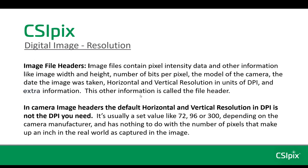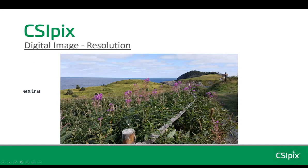In camera image headers, the default horizontal and vertical resolution in DPI is not the DPI you need in forensics. It's usually set to a value like 72, 96, or 300 depending on the camera manufacturer. It has nothing to do with the number of pixels that make up an inch in the real world as captured in the image. It would be impractical and usually impossible for a standard camera to determine DPI as required for forensic image analysis — most images wouldn't have one DPI in that sense anyway, because things in the foreground would have a much higher DPI than things in the background.